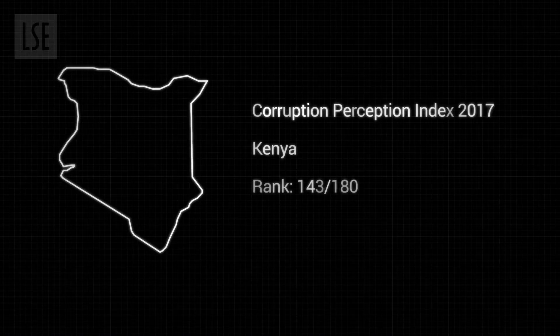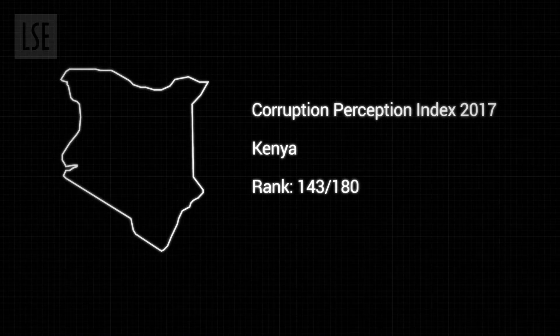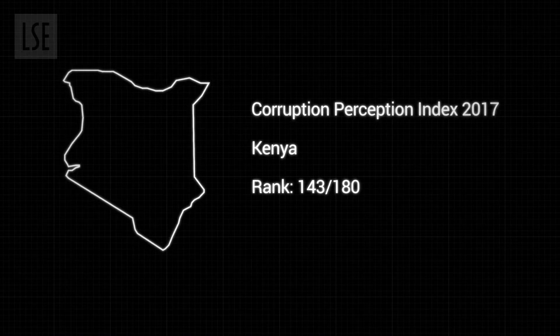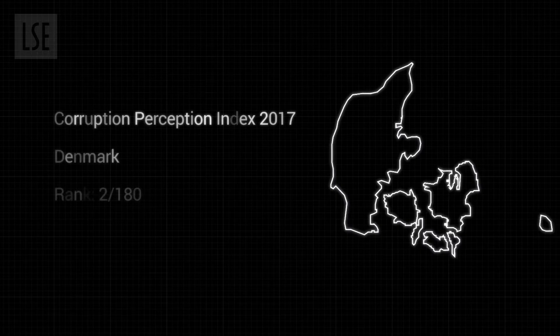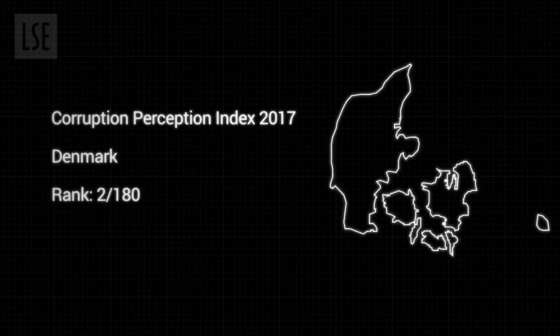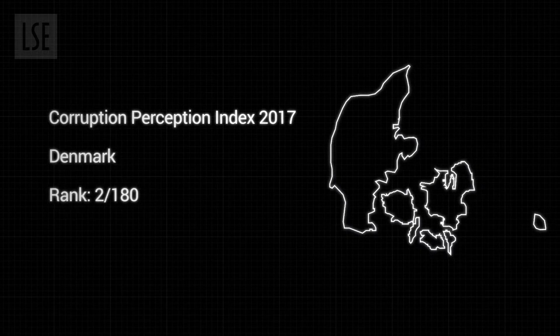Corruption is costly in a variety of different ways. Most of the world actually lives in corrupt countries, and in these places buildings will literally fall down because they're poorly constructed. The average Kenyan is estimated to pay 16 bribes a month. In contrast, the average Dane may not pay a bribe in their entire life.